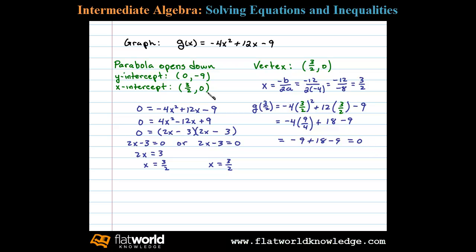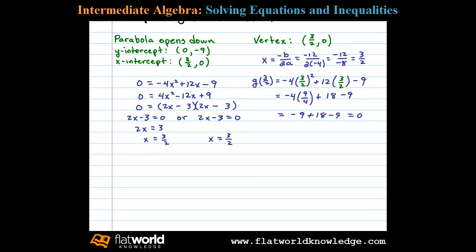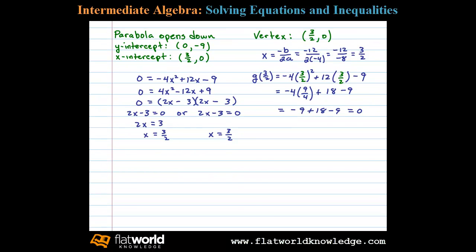Okay, with the y-intercept, the x-intercept, and the vertex, we're ready to graph this parabola. So we have a y-intercept at (0, -9), an x-intercept at 3/2, comma 0—3/2 is the same as one and a half—so (1.5, 0) is also the vertex. Now we should label that.